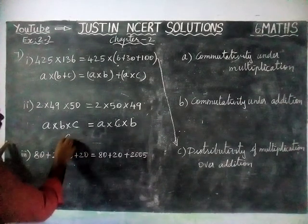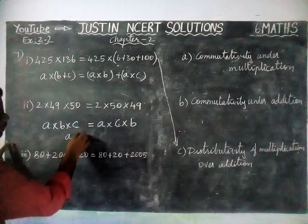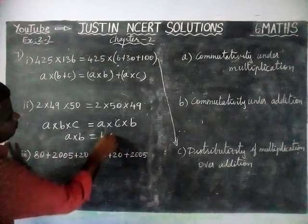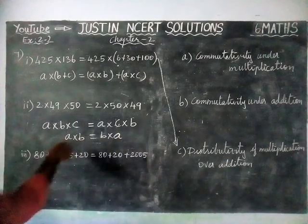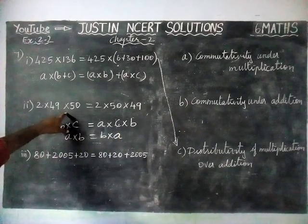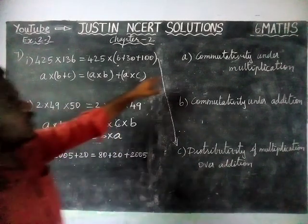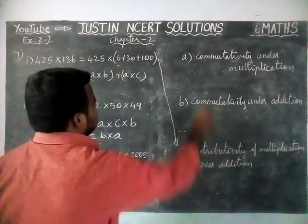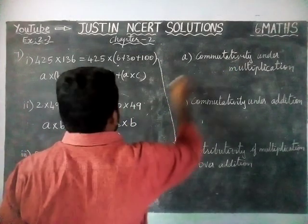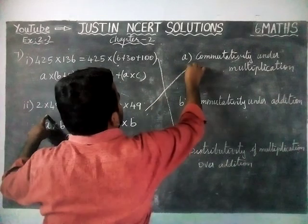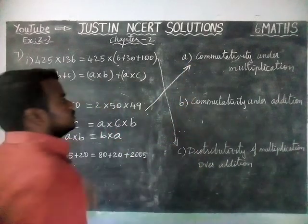Here we have studied that A into B is equal to B into A. By using this concept, this is applied — commutativity under multiplication. The option for the second question, option A, is the correct answer.